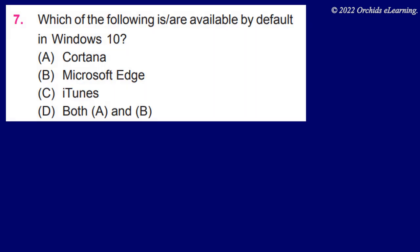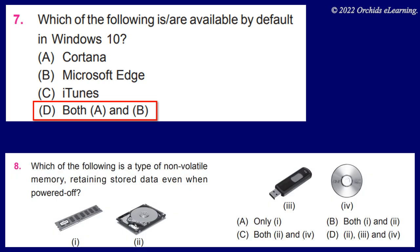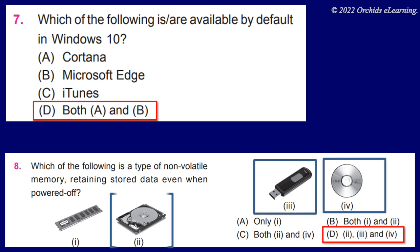Which of the following is a type of non-volatile memory, retaining stored data even when powered off? D, Hard disk, pen drive, and CD